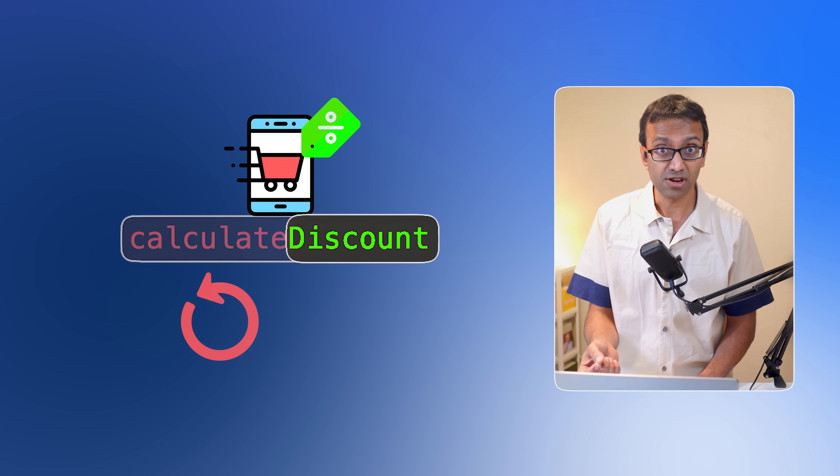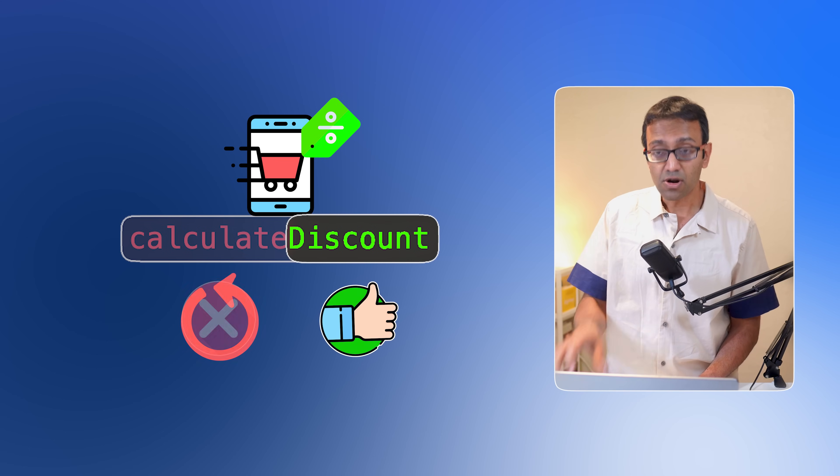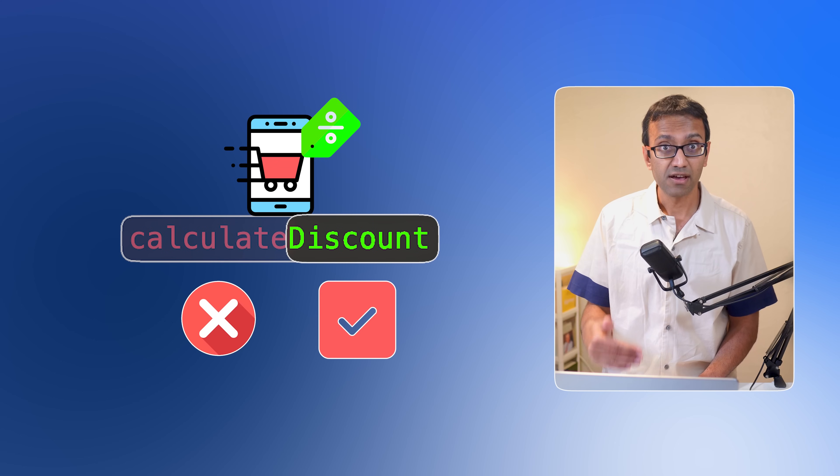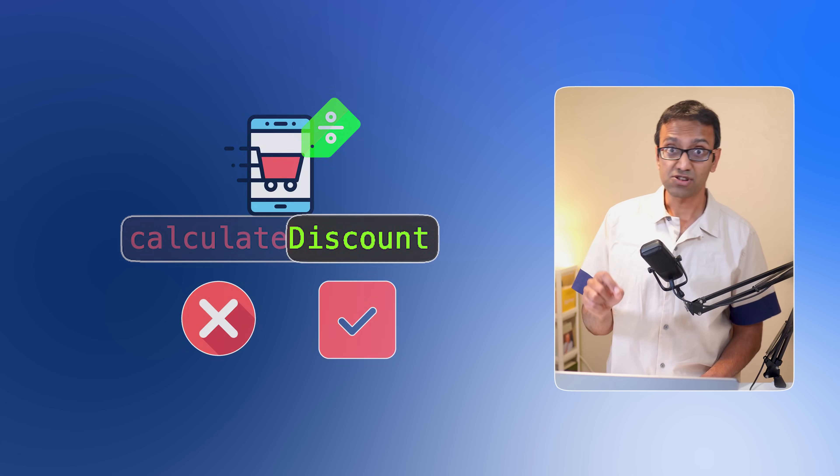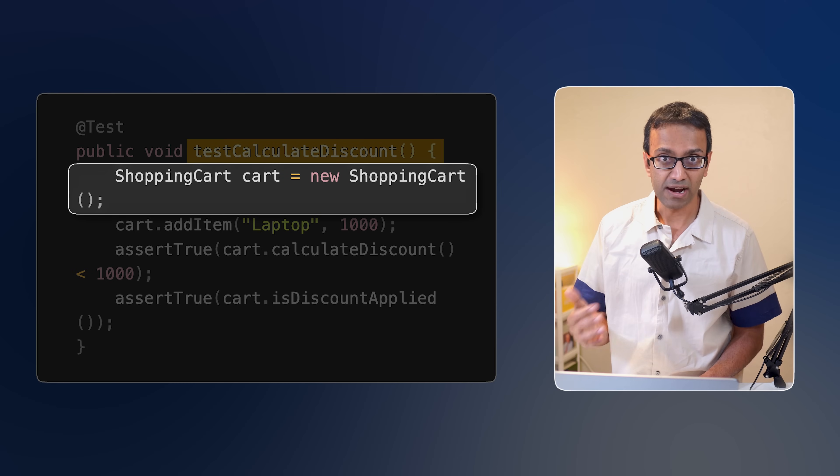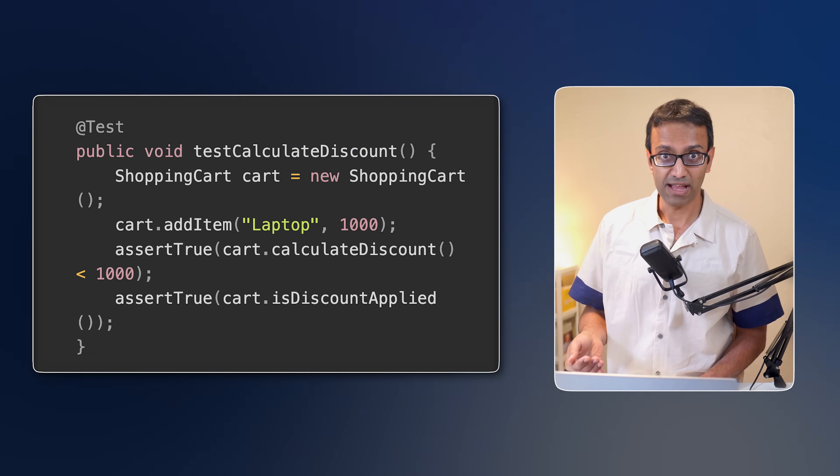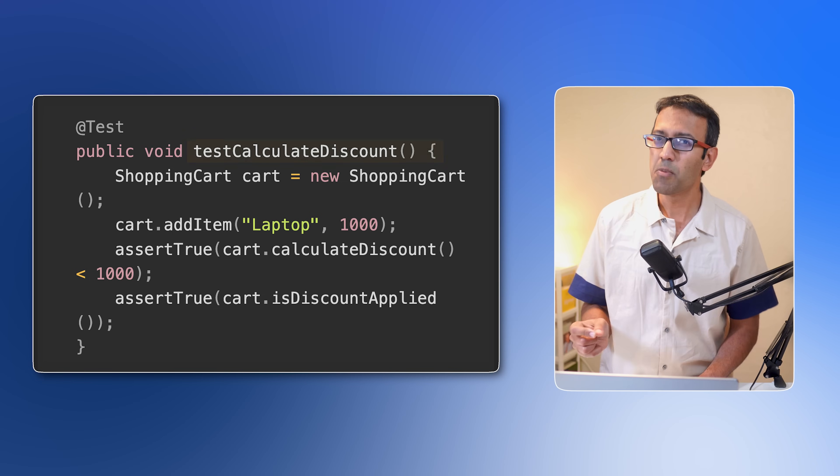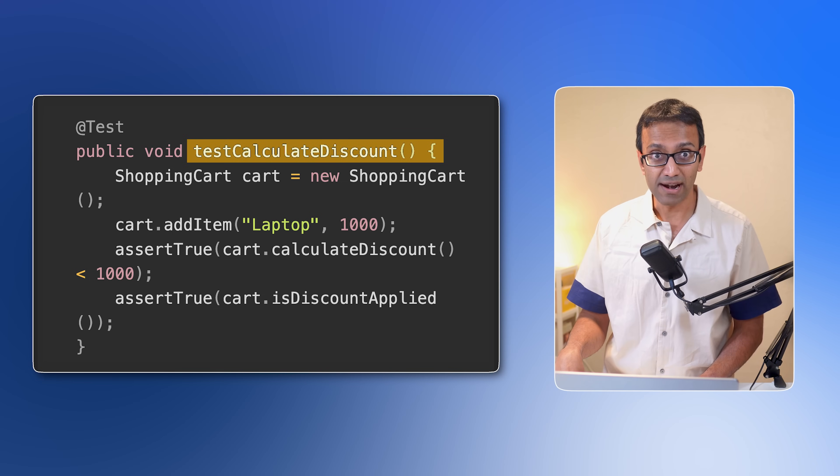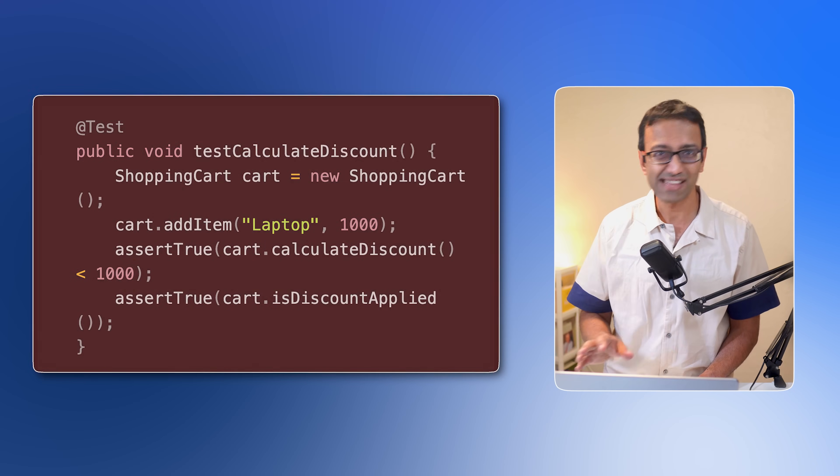It returns the discounted cost and then it applies the discount if it's available. The wrong way to test this would be to check those multiple behaviors in a single test. I have a test called calculate discount which initializes the shopping cart, adds an item, calculates the discount and checks if the discount is applied. We are testing both the discount calculation part and if the discount flag is set. Let me imagine this test fails. Now was the calculation wrong or was the flag not set? You wouldn't know.